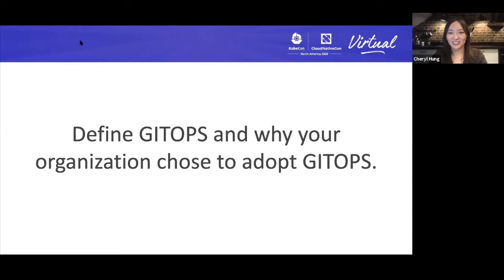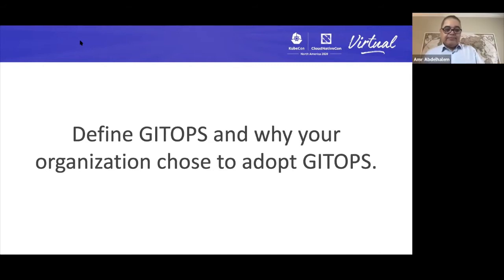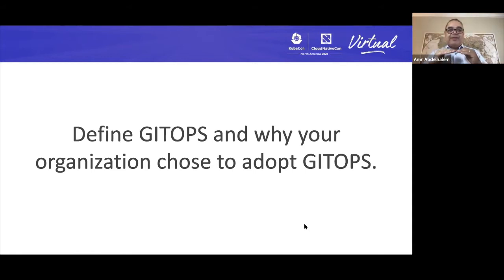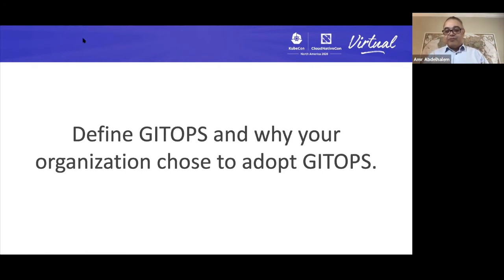GitOps was a very useful mechanism to enable our platform in a multicloud model — with different cloud providers and different infrastructure besides our private cloud. Having that abstraction layer underneath Kubernetes, where you have different network models, virtualization models, and programming mechanisms underneath the hood — GitOps abstracts that and ties all these cloud platforms together.